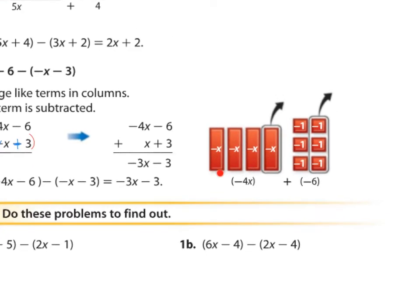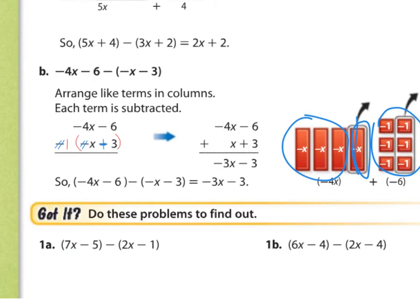You have the negatives. I have 4 negative x's — 4 of them — and I take away 1 of them. Subtract it away. I'm only left with 3. I have 6 negatives, and I take away 3 of them. When you take away 3 of them, you're just left with 3. So negative 3. So it's negative 3x, negative 3.